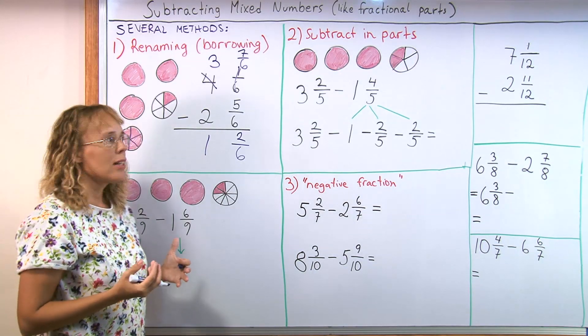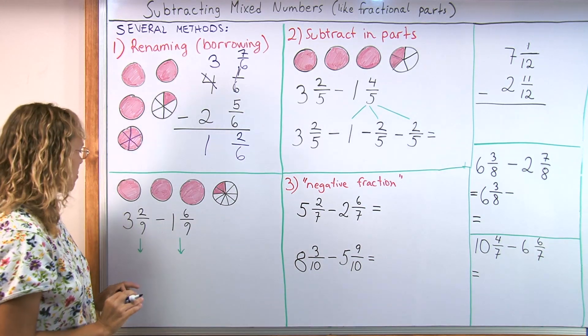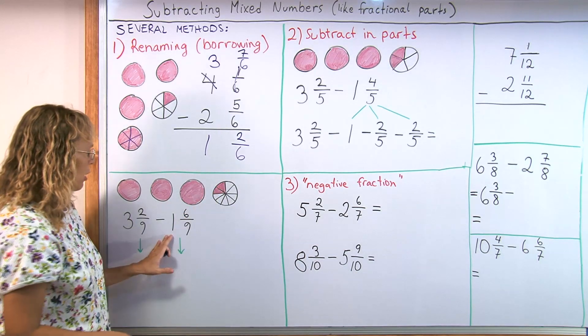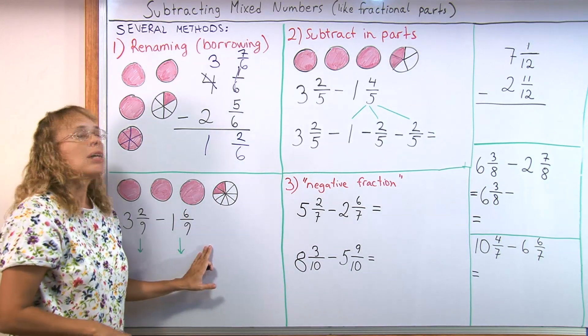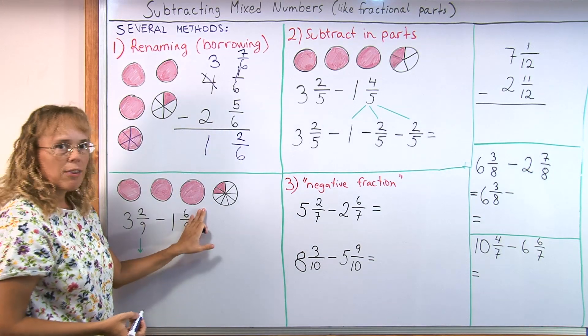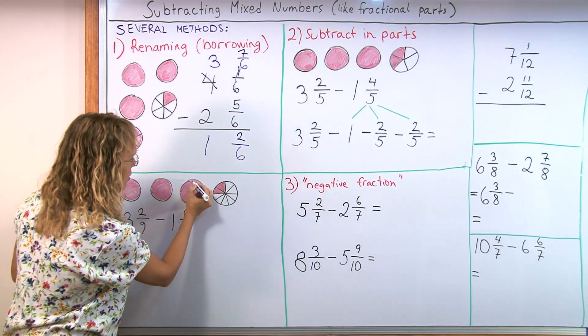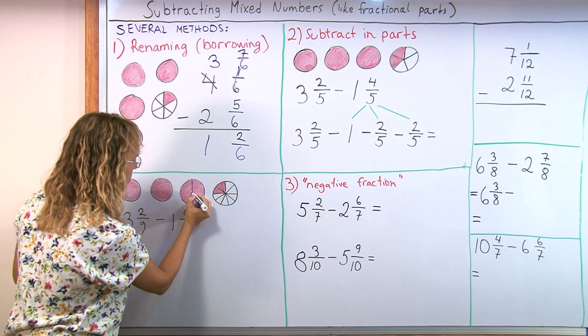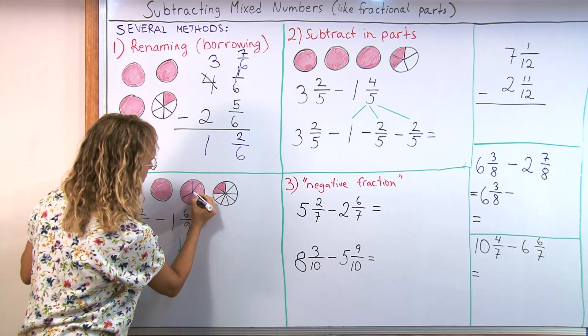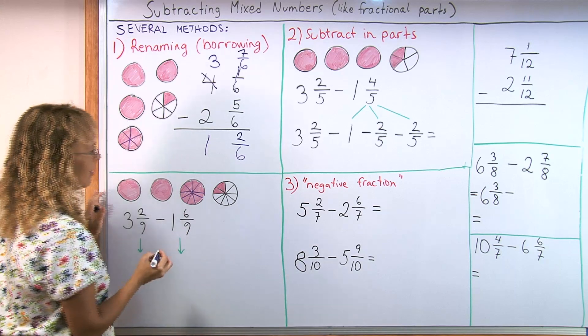We can do this same thing, even if the numbers are written here. The problem is written horizontally. You can do the same thing. So let's look at this example. We have 3 and 2/9. We need to take away 1 and 6/9. If you use a visual model, then over here you have to take one of the pies and divide it into ninths this time. And to do that, first divide it into thirds. And then each third into 3 parts.